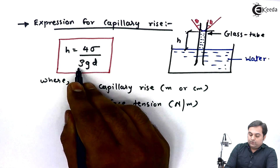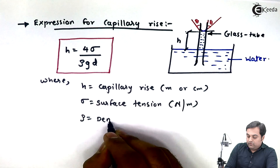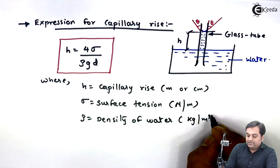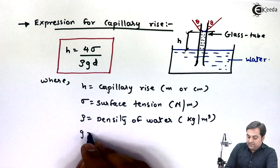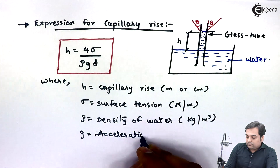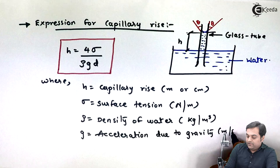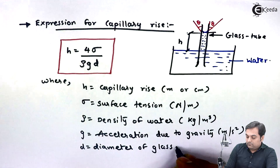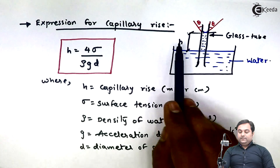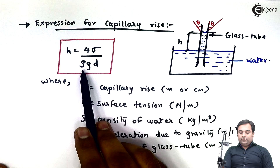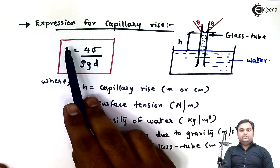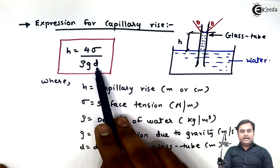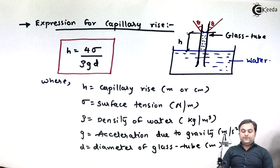Here, sigma (σ) is surface tension in Newton per meter, rho (ρ) is the mass density of water in kg per meter cube, g is acceleration due to gravity in meter per second squared, and D is the diameter of the glass tube in meters. As we can see, if we increase the surface tension H increases; if we decrease the diameter, H increases. To increase the height we decrease the diameter and decrease the density of the liquid.